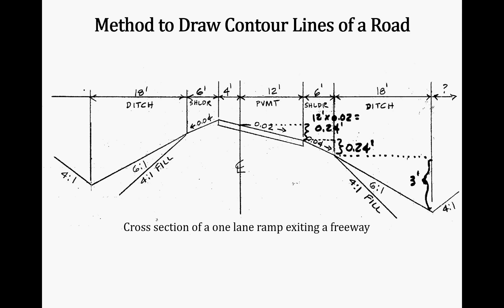There are six-foot wide shoulders on each side of the pavement that slope at 4%. Beyond that is the ditch with a 4:1 slope depending on whether it's a cut or fill section, and then the back slope ties into the existing ground at a 4:1 slope.